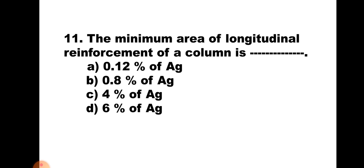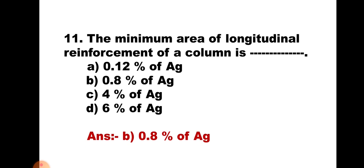Question number 11. The minimum area of longitudinal reinforcement of a column is: A) 0.12% of Ag, B) 0.8% of Ag, C) 4% of Ag, or D) 6% of Ag. The minimum area of longitudinal reinforcement of a column shall not be less than 0.8% of Ag. Hence the correct answer is B, 0.8% of Ag.